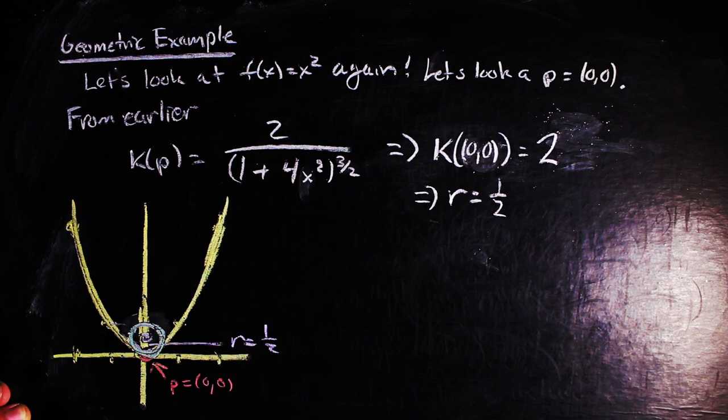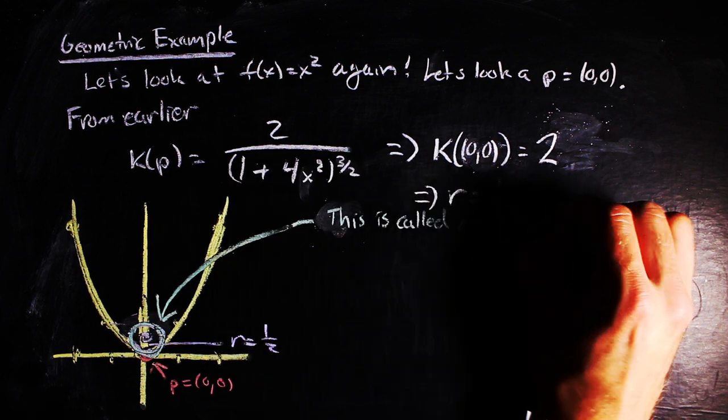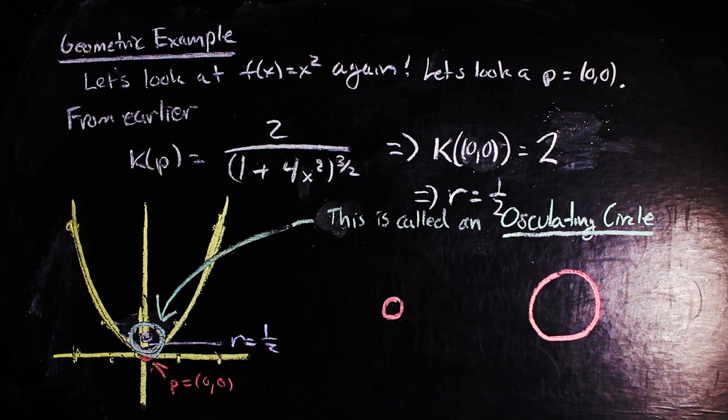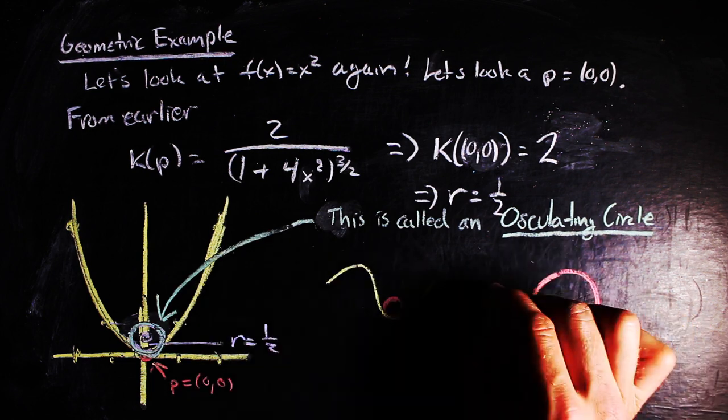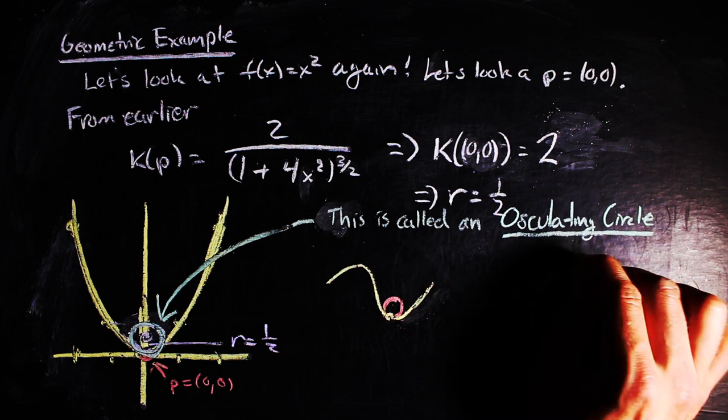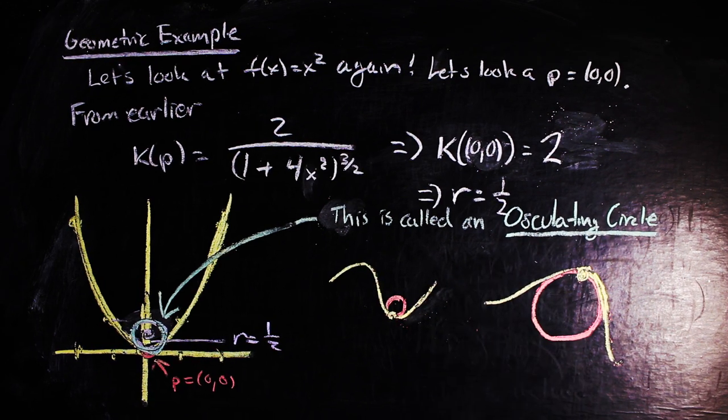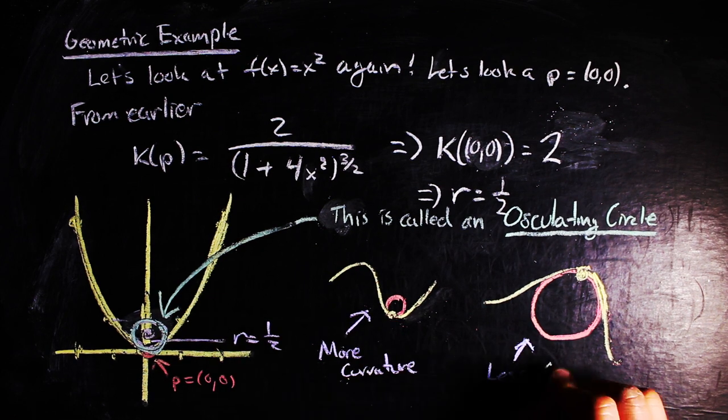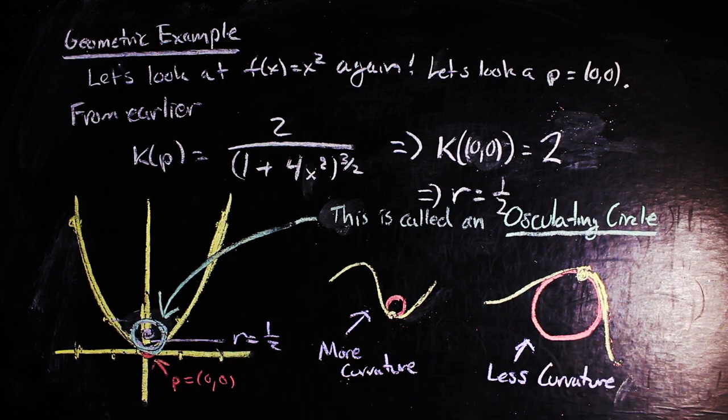These circles have a special name, and they're called osculating circles. Intuitively, the smaller the osculating circle at a point, the tighter the curve is at that point, and thus there is more curvature that is present at that point. And alternatively, the larger the osculating circle, the more strung out the curve is, and thus the less curvature at that point.